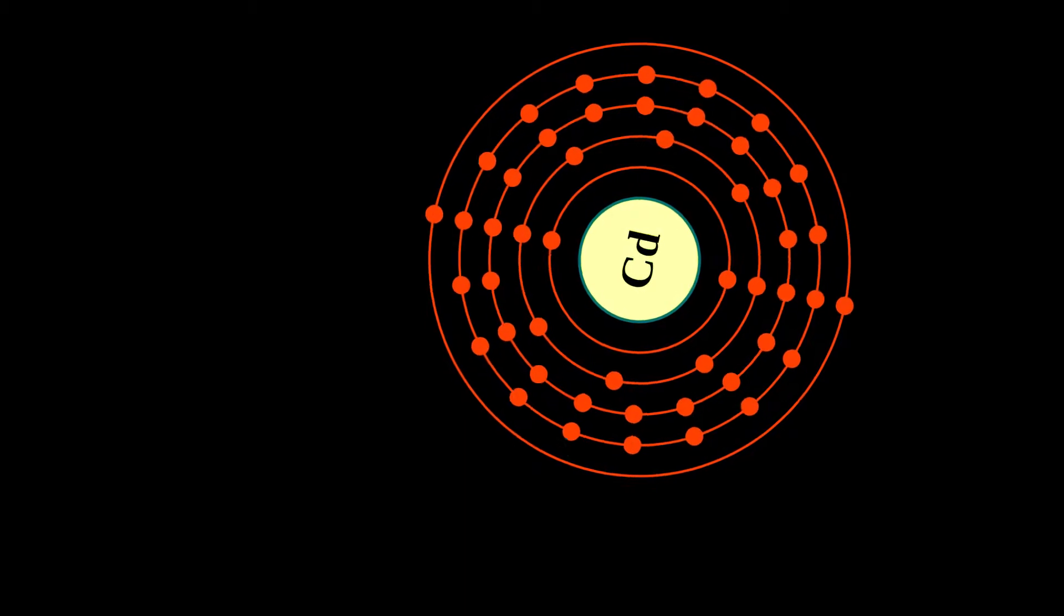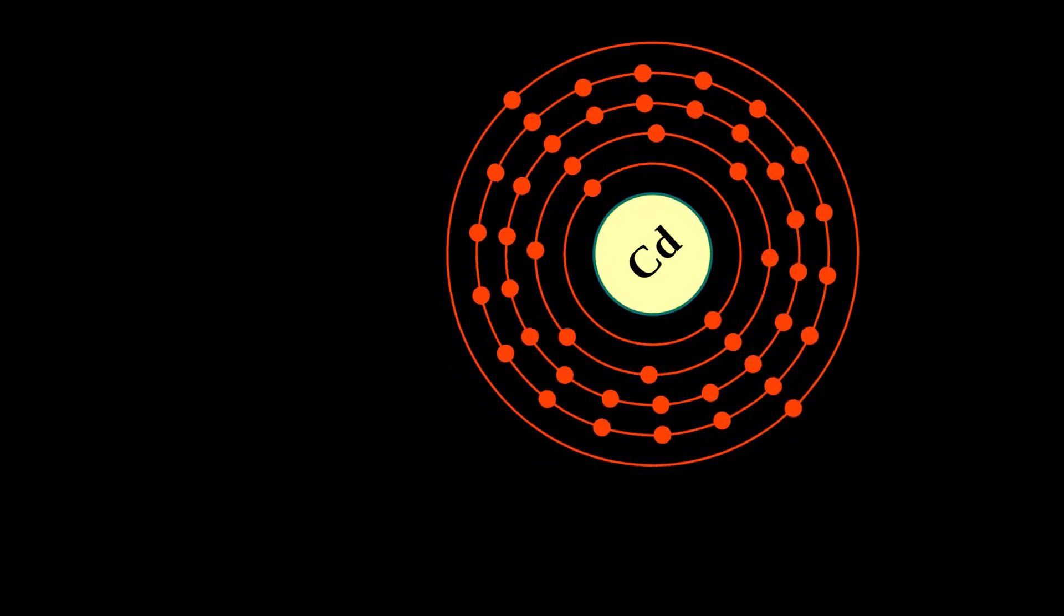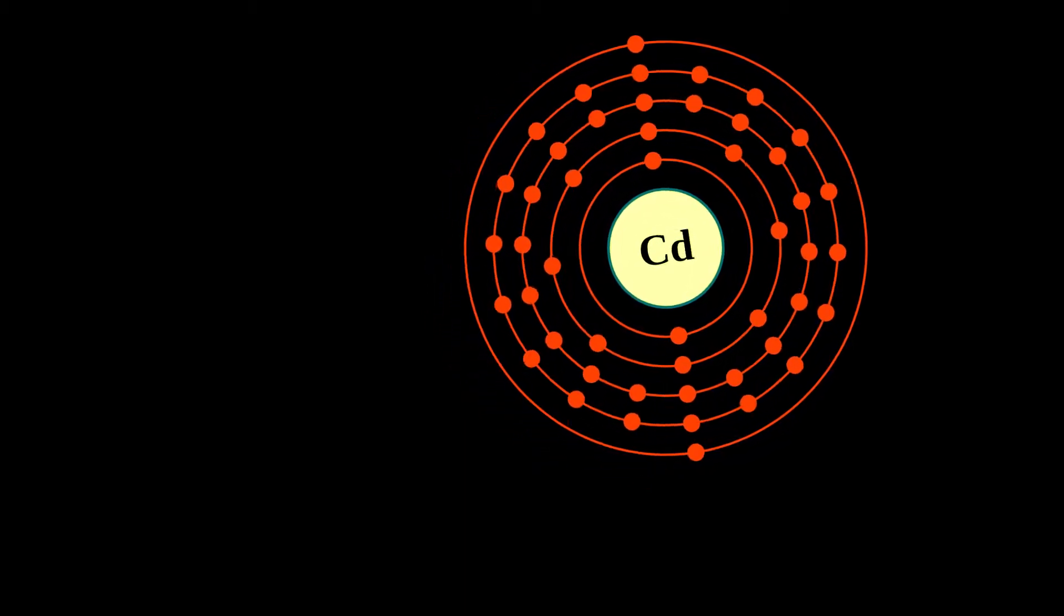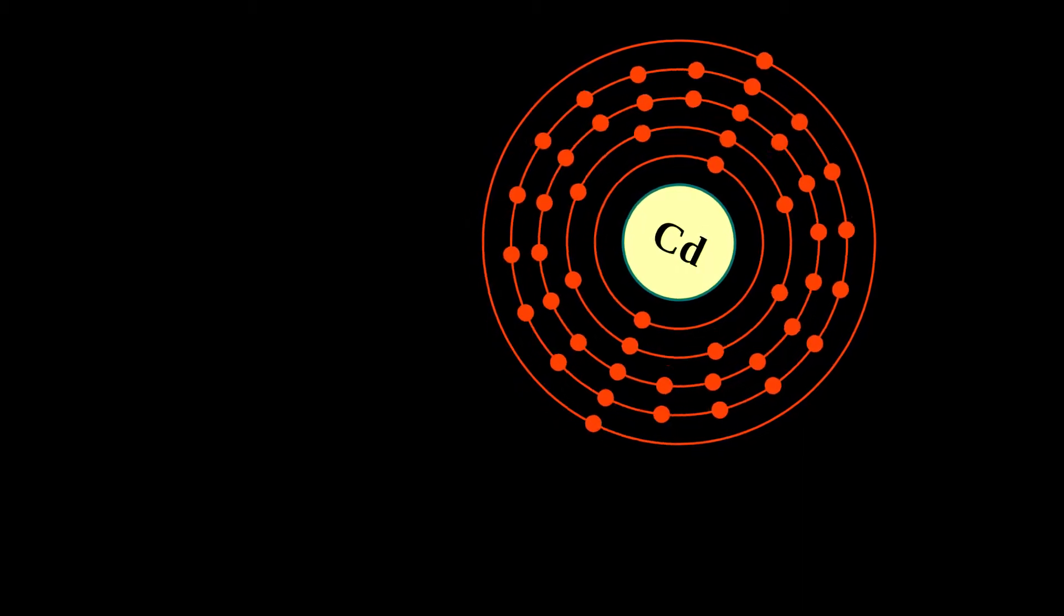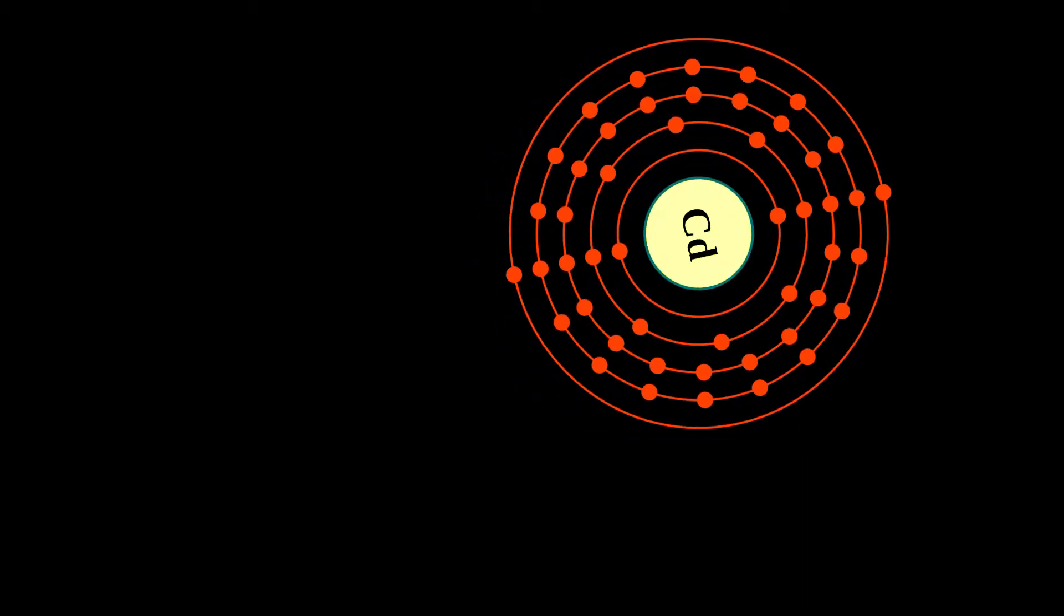Like zinc, it demonstrates oxidation state plus 2 in most of its compounds, and like mercury, it has a lower melting point than the transition metals in groups 3 through 11.